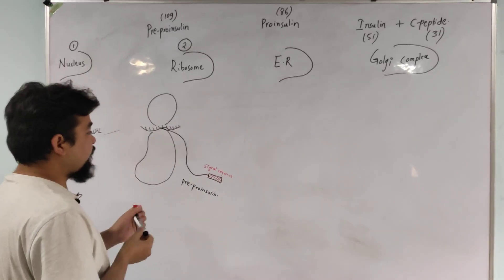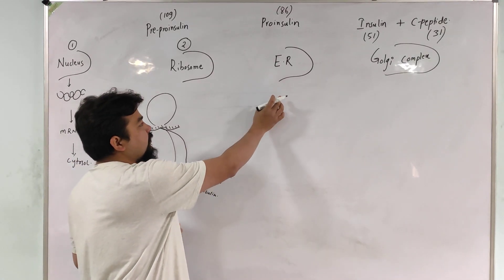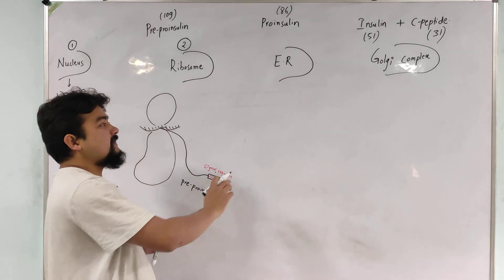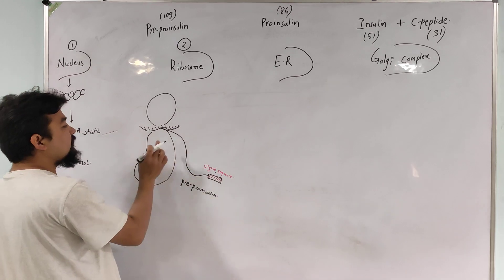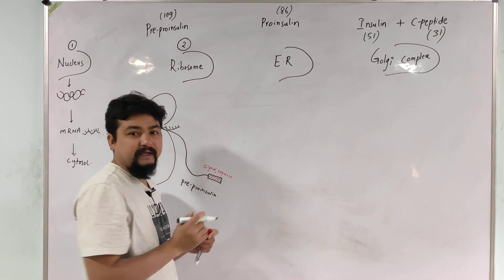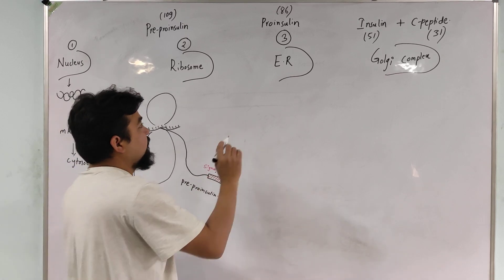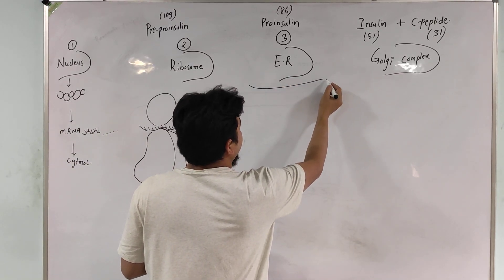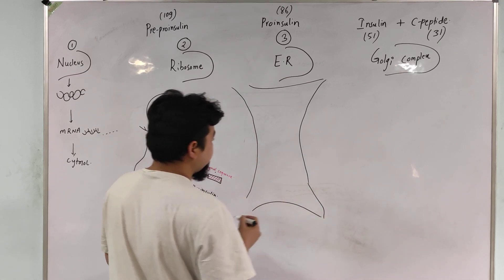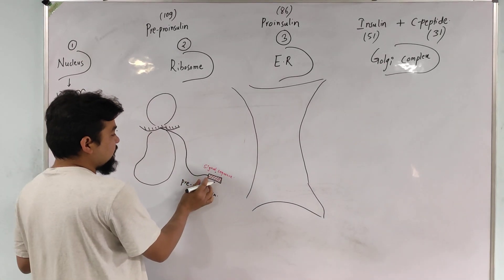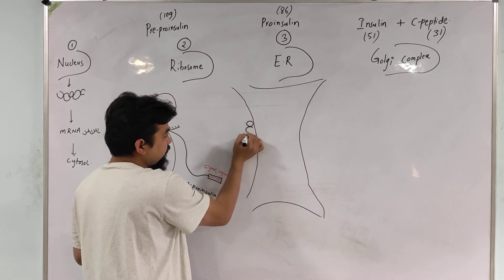The function of the signal sequence is to transport, or carry, the pre-pro-insulin along with the ribosome toward the endoplasmic reticulum, because the next step occurs in the endoplasmic reticulum. The signal sequence transports pre-pro-insulin along with the ribosome to the surface of the endoplasmic reticulum. When multiple ribosomes get attached to the surface of the endoplasmic reticulum, it is known as rough endoplasmic reticulum.